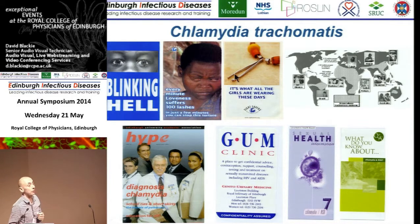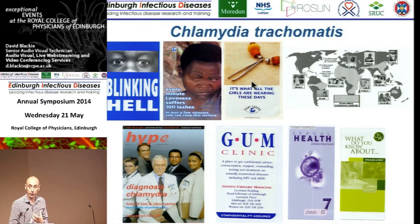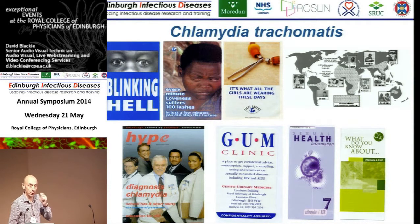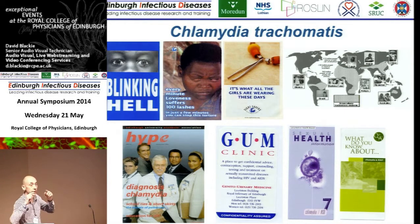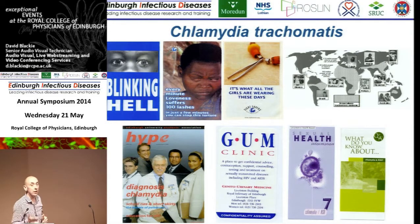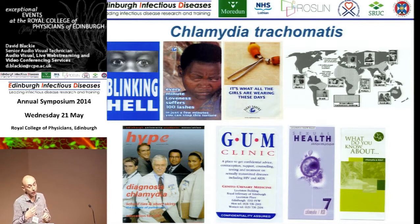These leaflets from the charity Sight Savers illustrate the condition. This woman has what looks like barbed wire instead of eyelashes — the caption reads 'this is what all the girls are reading these days.' This picture of a necklace shows that the only way people can get relief is by plucking their eyelashes out. What happens is you get inflammation in the eyelids, the eyelid inverts, the eyelashes abrade the cornea, you get secondary infections, and then irreversible blindness. Once it reaches that stage it's not treatable, but the early stage can be treated with antibiotics.